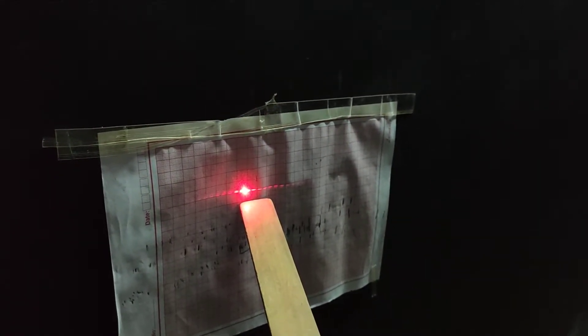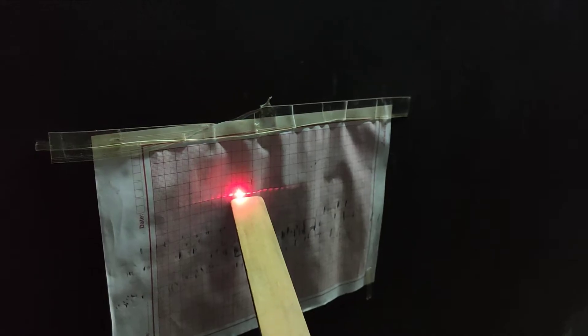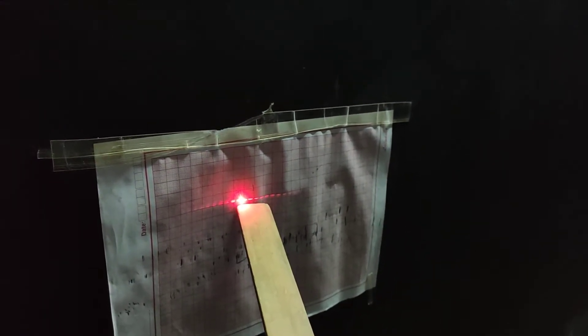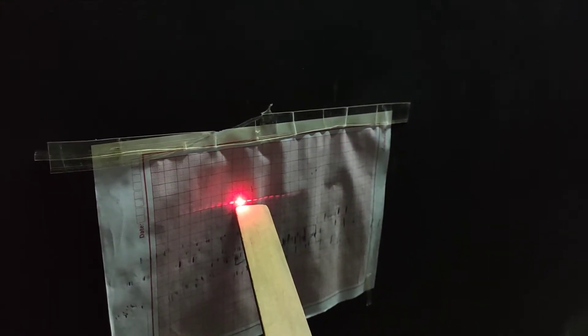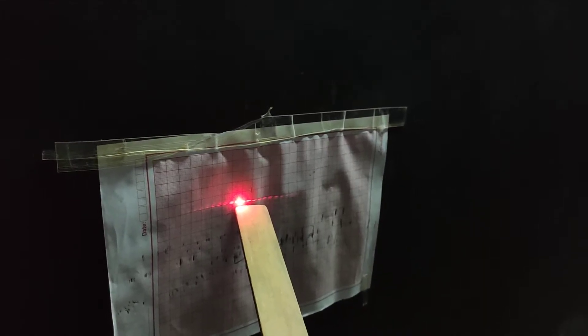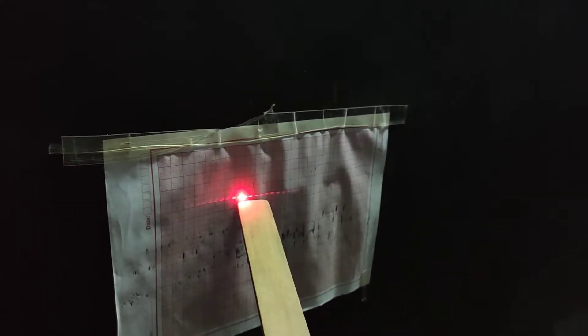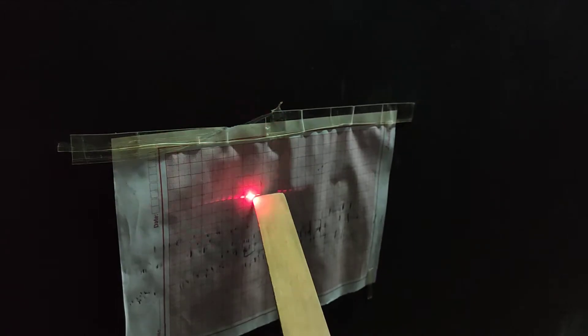So in this experiment we have to measure the width of the central maxima. Using the graph sheet itself you can measure or you can use an additional scale for measurement of the width of the central maxima. First dark fringe to this dark fringe.